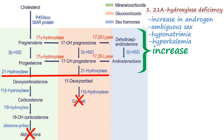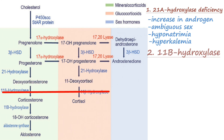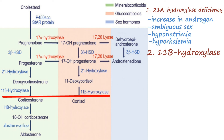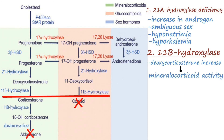Another commonly deficient enzyme is 11-beta-hydroxylase. In its deficiency, there will be no synthesis of cortisol, but there is normal synthesis of androgens. And though there is no synthesis of aldosterone, 11-deoxycorticosterone will be formed because it is prior to this enzyme block. Since it has mineralocorticoid activity, we will not see any manifestations of mineralocorticoid deficiency — there will only be decreased glucocorticoid activity.